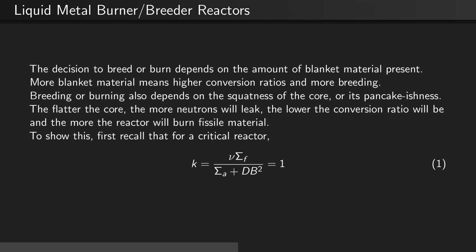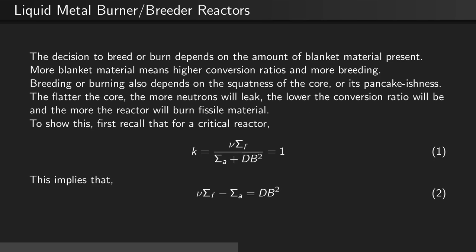To show this, first recall that for a critical reactor, the multiplication factor equals nu times the macroscopic fission cross-section, divided by the macroscopic absorption cross-section plus the diffusion coefficient times the buckling squared, which, since the reactor is critical, happens to be equal to 1. This implies that nu σf minus σa equals D B-squared.